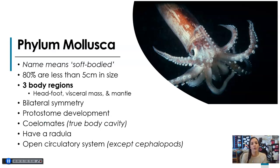So in Latin, the name itself means soft-bodied. And actually, even though we know about a lot of very large ones, like the giant squid and the giant clam and all those animals, 80% of molluscs are actually less than 5 centimeters in size. They have three main regions: the head-foot, the visceral mass, and the mantle.